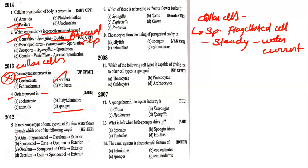For 2012: in the most simple type of canal system, the water flows in which way? It is very common. First water comes to ostia, then goes to spongocoel, then osculum, and then to the exterior. So the path is: ostia → spongocoel → osculum → exterior.